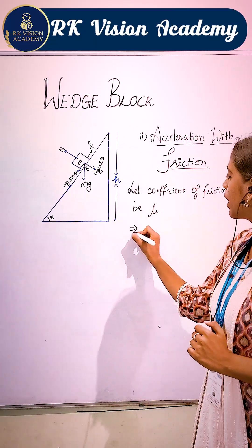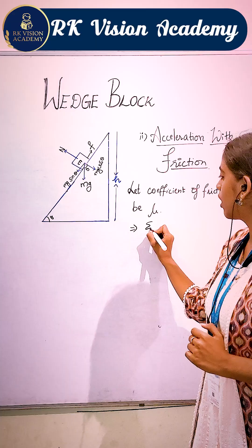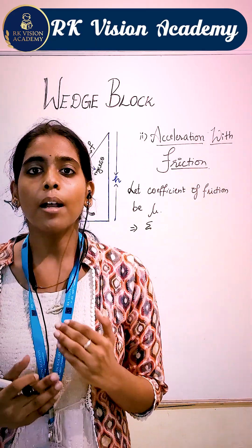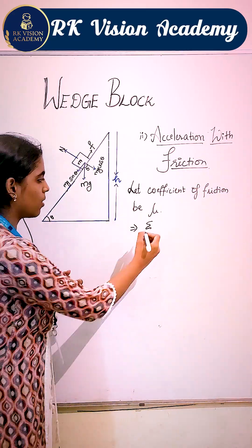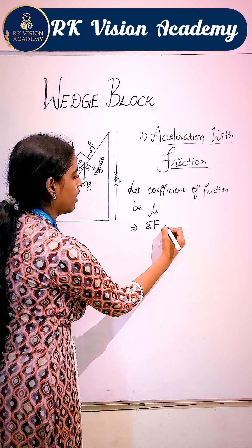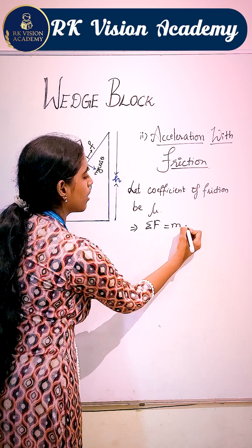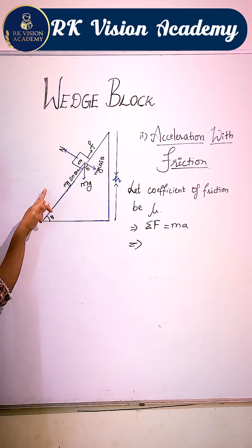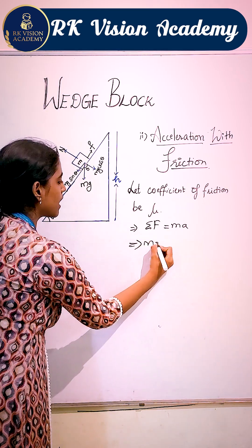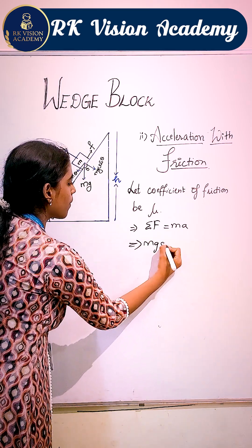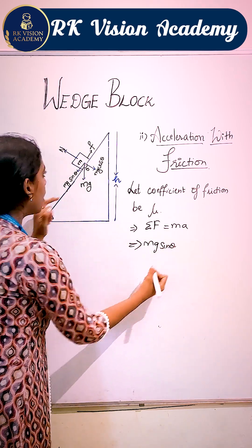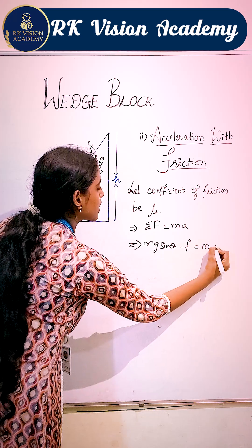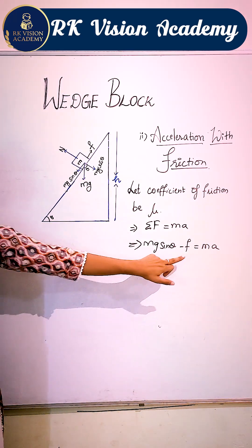So, according to Newton's second law, we know that the net force is going to be mass into acceleration. We observe that the net force acting on the system is mg sine theta minus the friction force, equal to mass into acceleration.